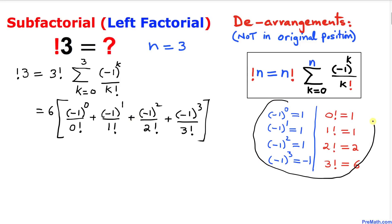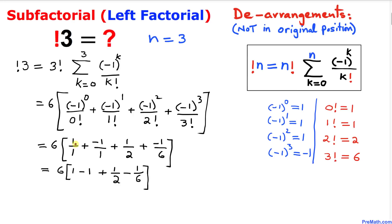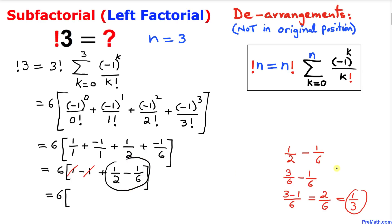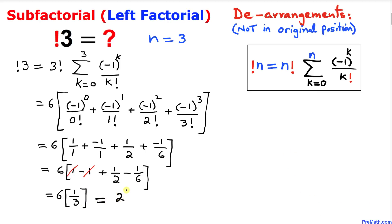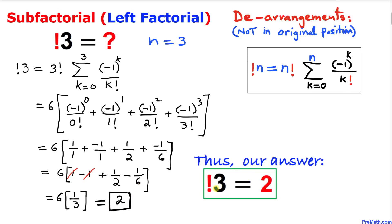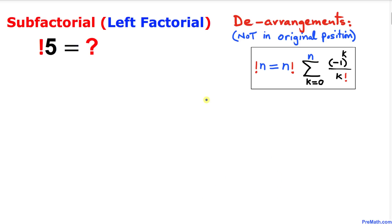Simplifying those fractions gives us six times: one over one, plus negative one over one, plus one over two, plus negative one over six. The positive one and negative one cancel each other out. Simplifying the remaining two fractions gives one over three. So six times one over three equals two. The sub factorial of three is two.